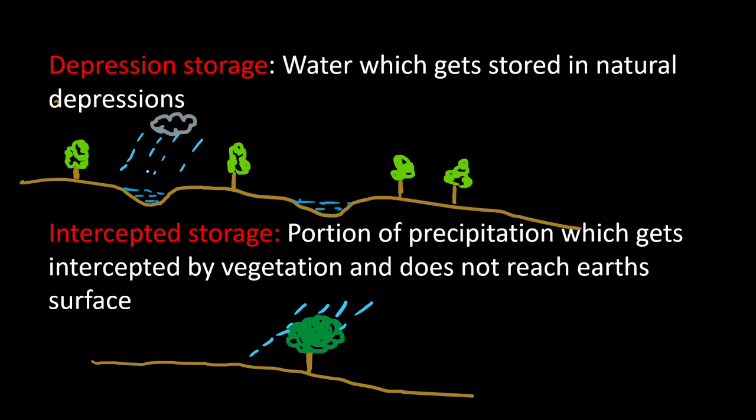The next component is intercepted storage — the portion of precipitation intercepted by vegetation. Not all rain falling onto the earth reaches the earth surface; in between, it is intercepted by leaves and vegetation. That intercepted water will be evaporated back and will not reach the earth surface. This portion is called intercepted storage.